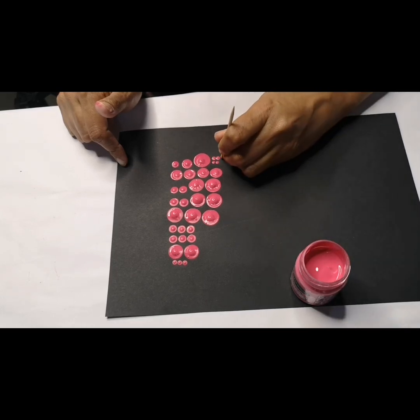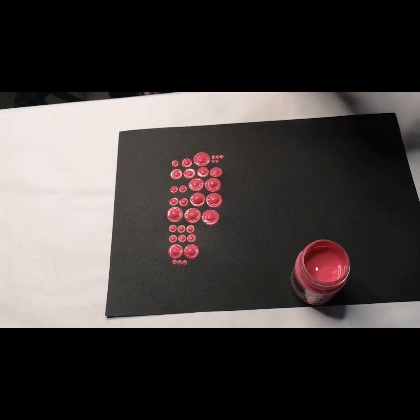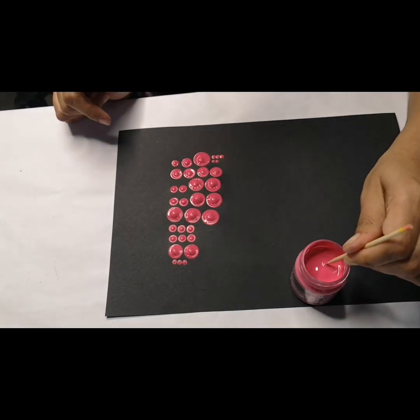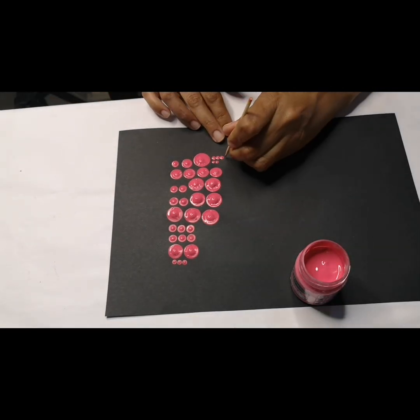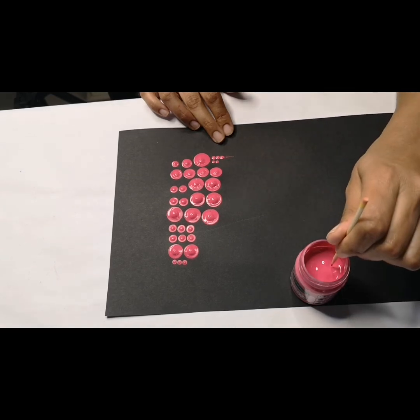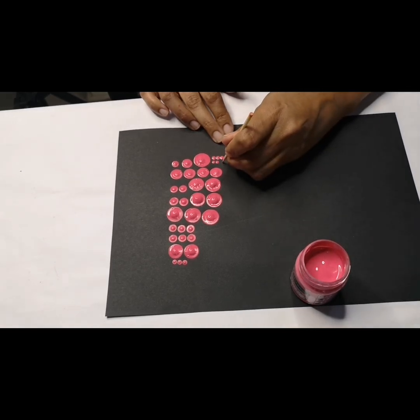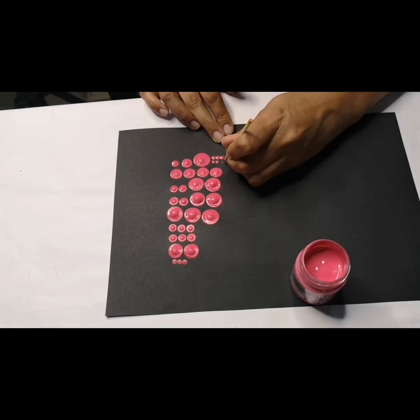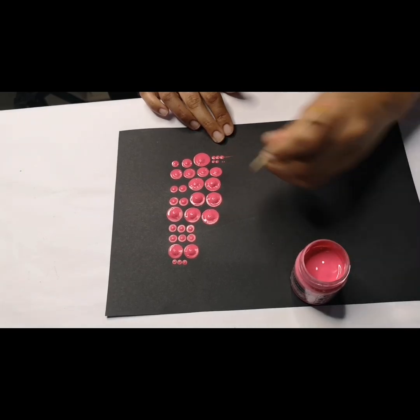And if you use the pointy end and you just lift enough paint, you can use it to make dots that are really fine and that go from big to small. So you can either use it to make teeny tiny dots by dipping each time and the dots will be the same size.